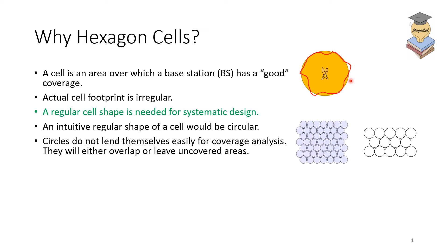The problem with circles: circles do not lend themselves easily to coverage analysis. If you have an area, for example, a square area, we have two options. Either we have overlapping circles, or we have to leave uncovered spaces like we have here. And this is why we don't use circles in our analysis.